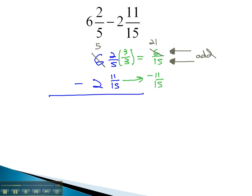We are now ready and able to subtract. 21 minus 11 is 10 fifteenths, and we can subtract 5 minus 2 to get 3, to get an answer of 3 and 10 fifteenths.